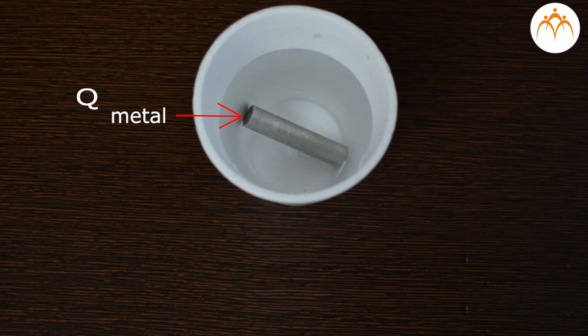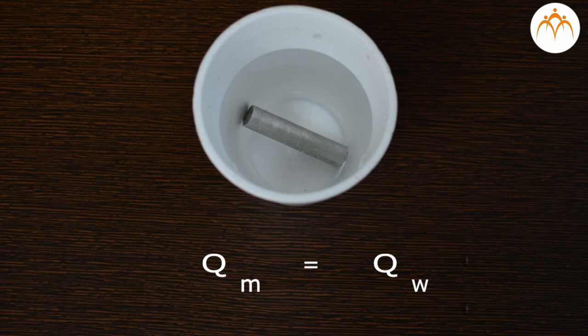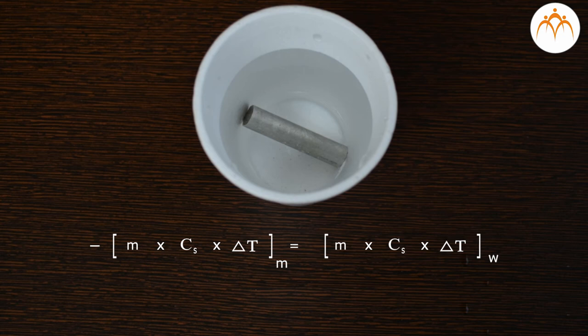Energy lost by metal is equal to energy gained by water. So, as metal loses energy to water, we will add a negative sign. Minus Qm is equal to Qw. Minus of m into Cm into delta Tm is equal to m into Cw into delta Tw. We will solve this equation to find out the initial temperature of aluminum.